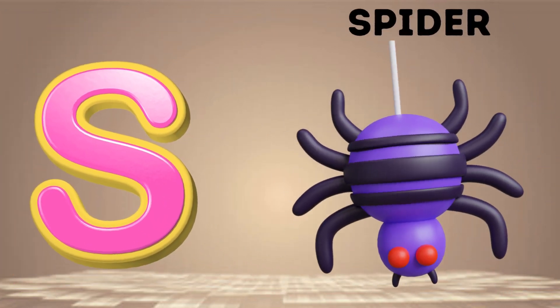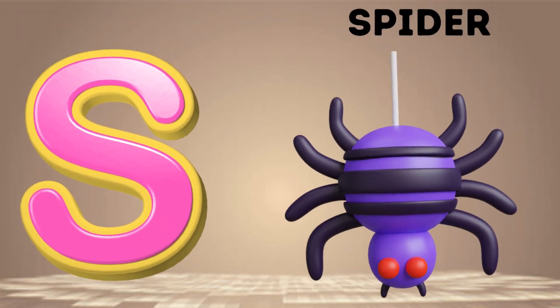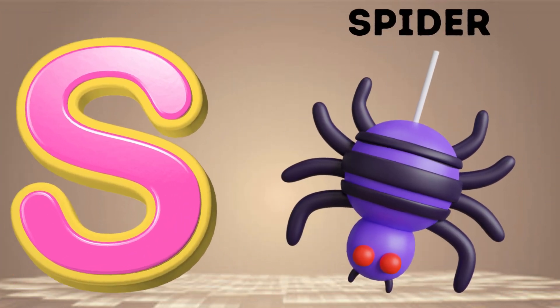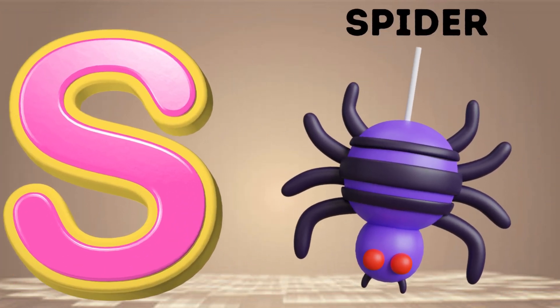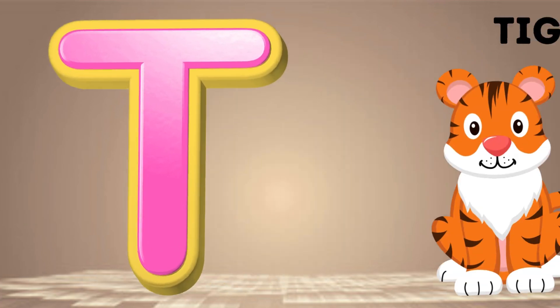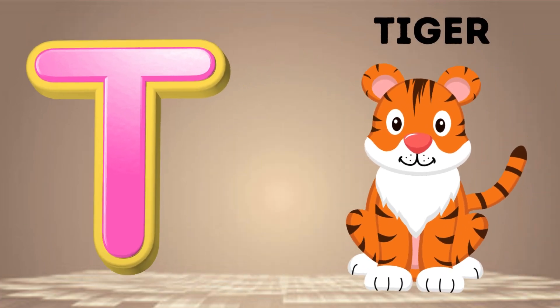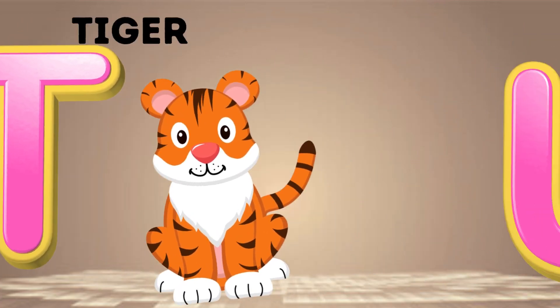Rainbow. S is for Spider. Sh, Sh. Spider. T is for Tiger. T, T.